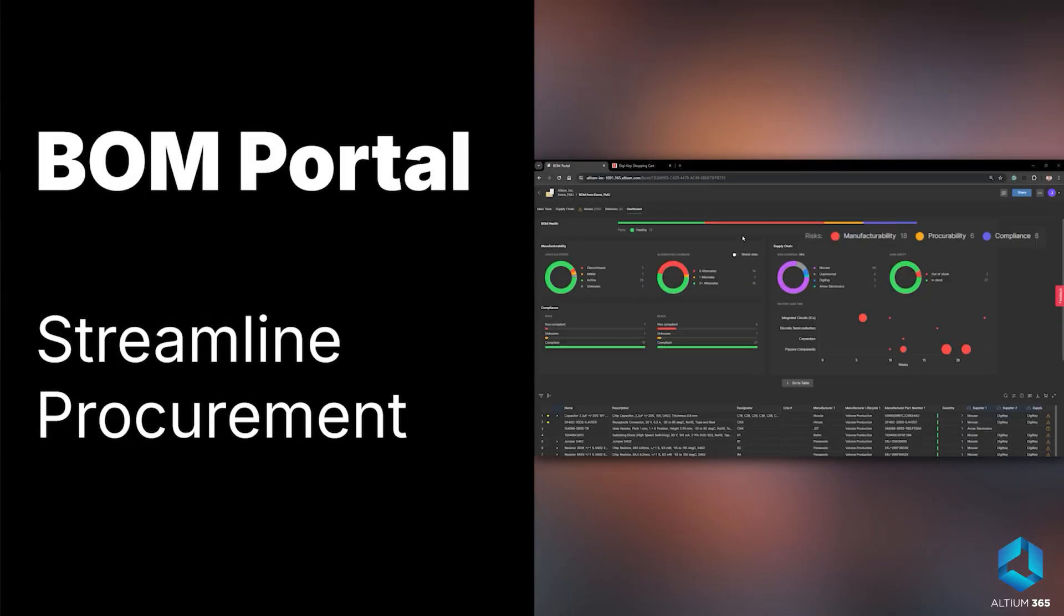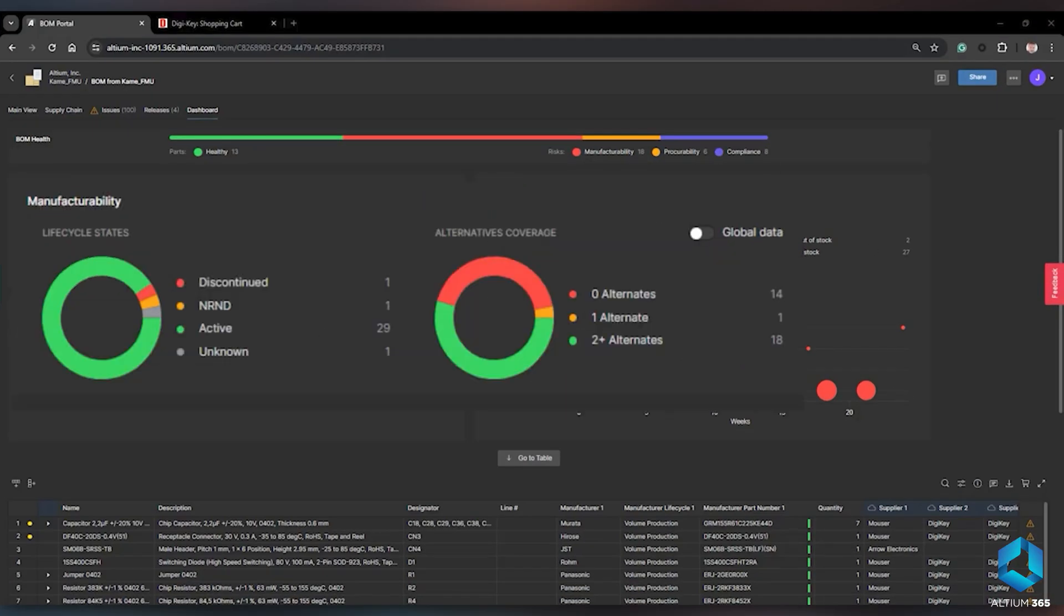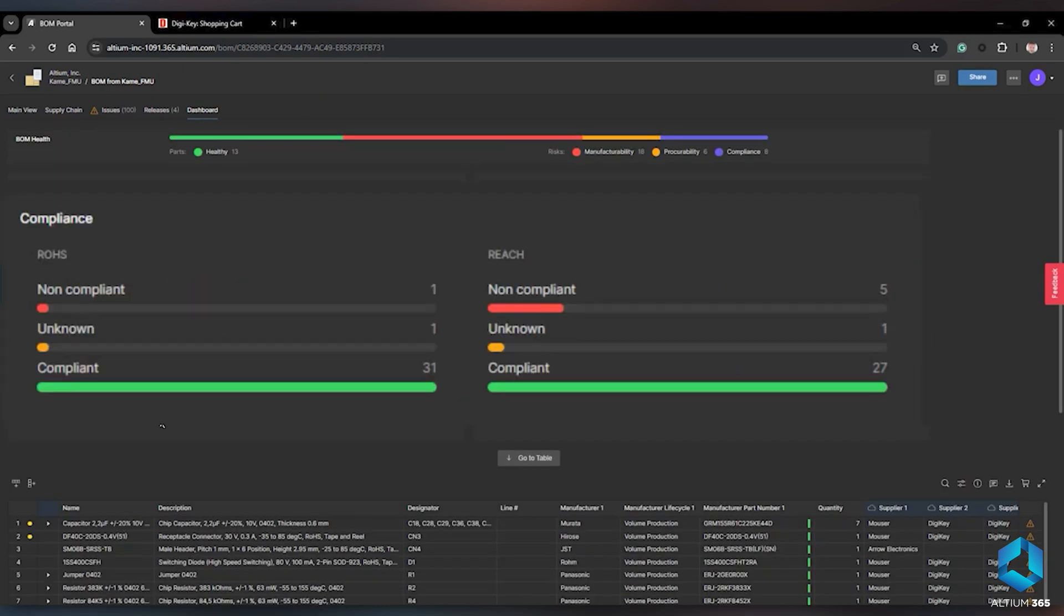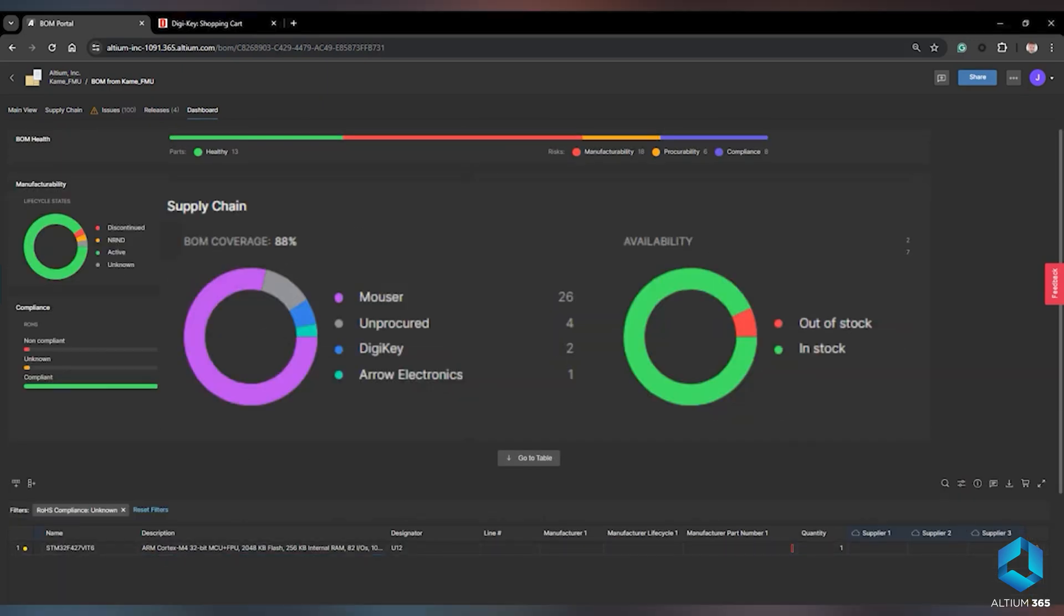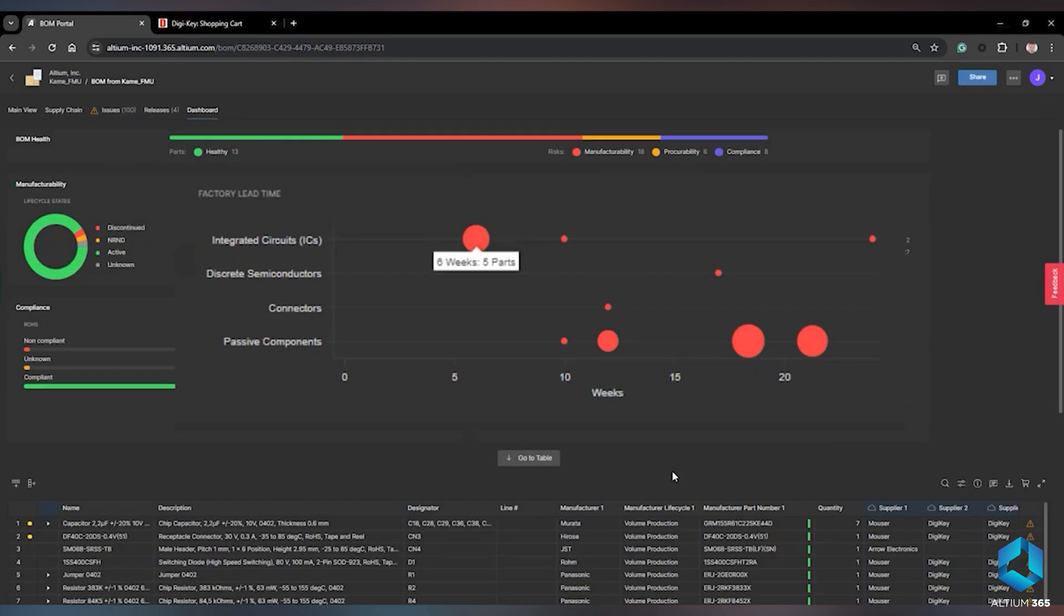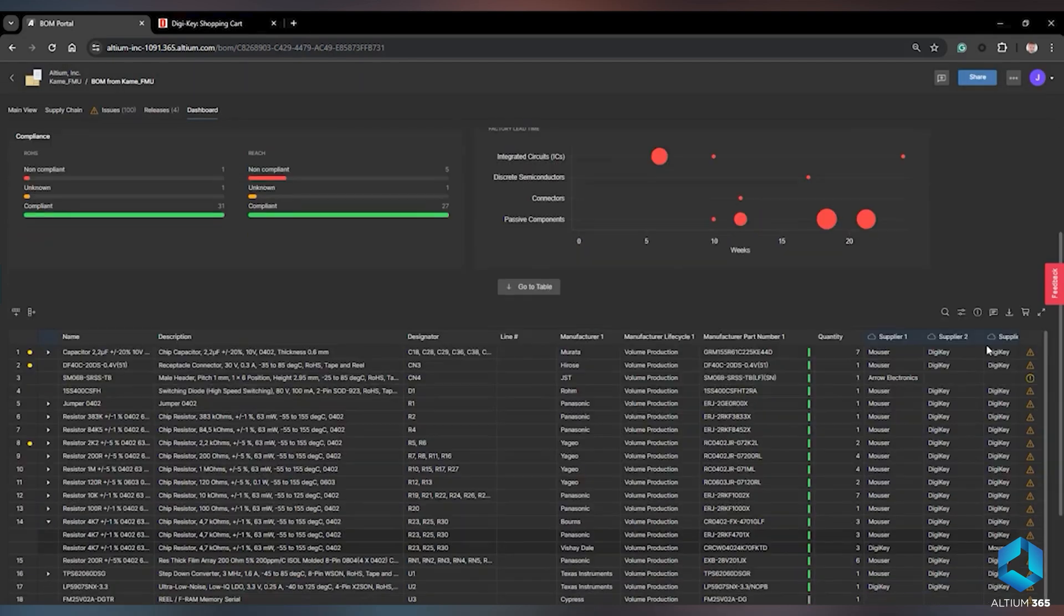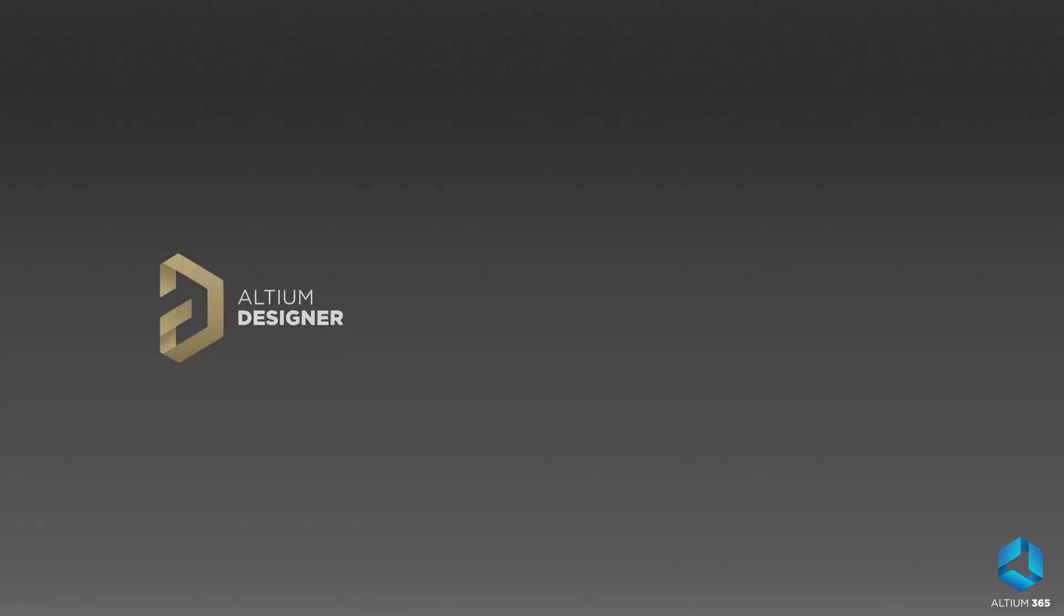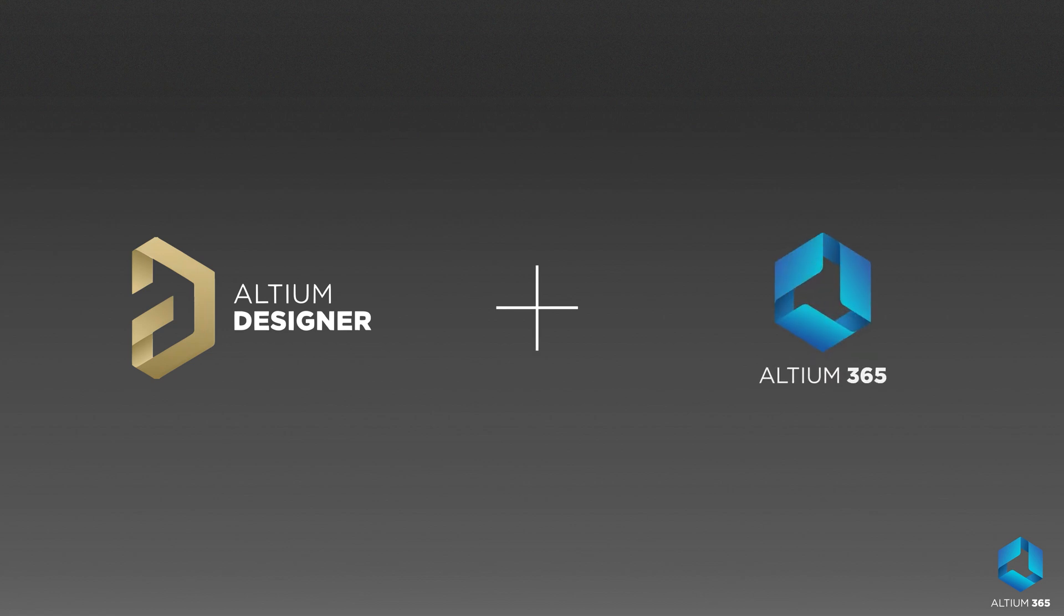Very important feature is its BOM portal. It keeps our component sourcing organized, where we can track component availability, compare suppliers and check if we got the right parts before placing an order. So remember, Altium Designer is where we design our electronics and Altium 365 is how we connect with the team to build the project into reality.